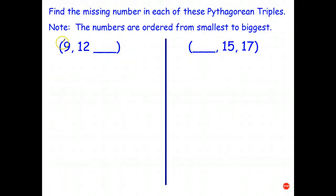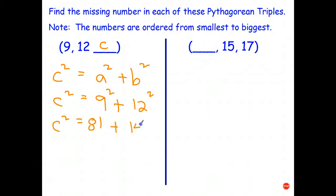Okie doke. Well, because the numbers are in order a, b, c, I'm trying to find c. So I can write c² = a² + b². I know that a is 9. I know that b is 12. 9 squared plus 12 squared. c² equals 81 plus 144.